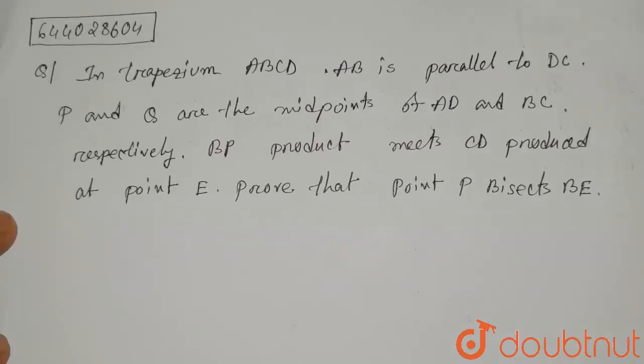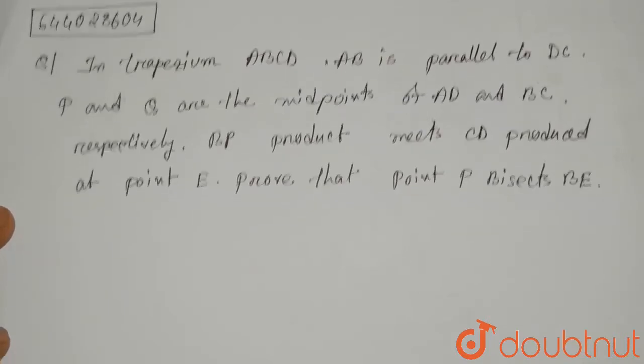Hello everyone, the question is: in trapezium ABCD, AB is parallel to DC. P and Q are the midpoints of AD and BC respectively. BP produced meets CD produced at point E. Prove that point P bisects BE.